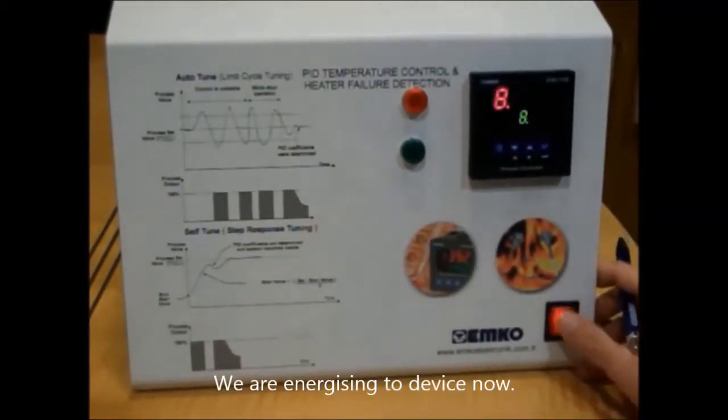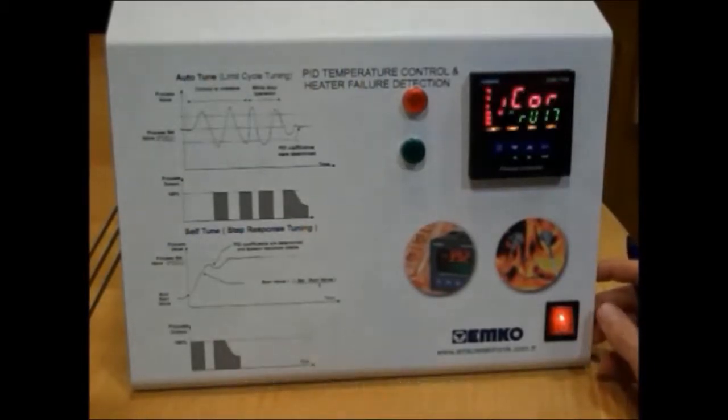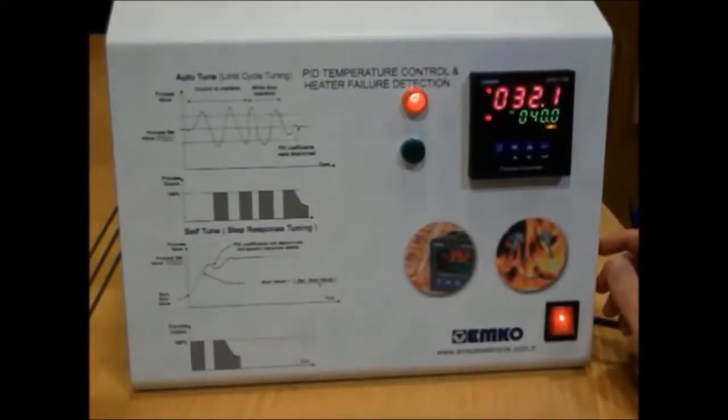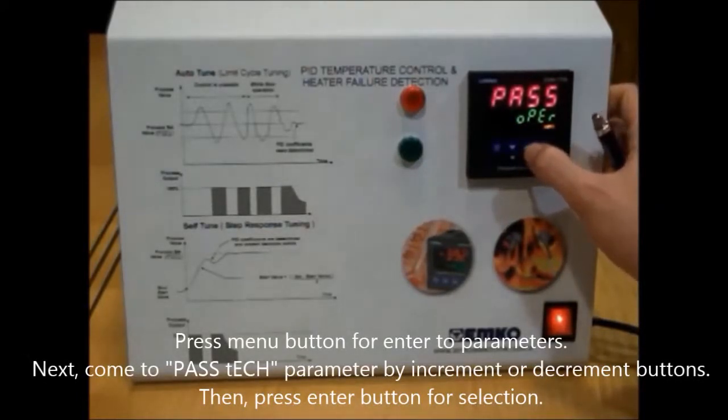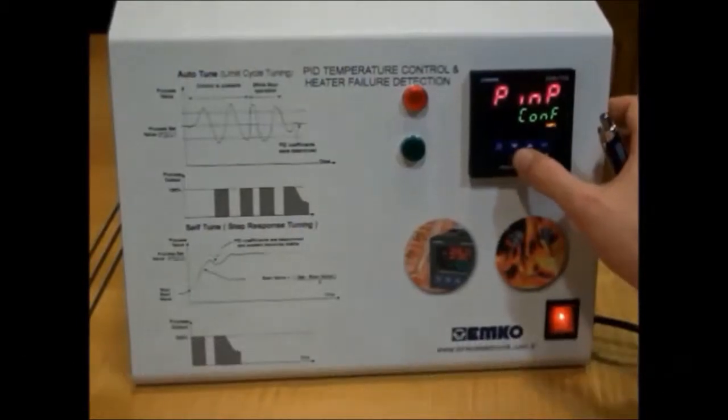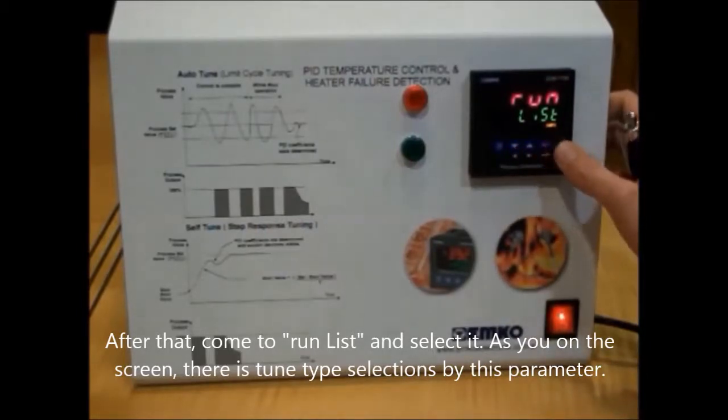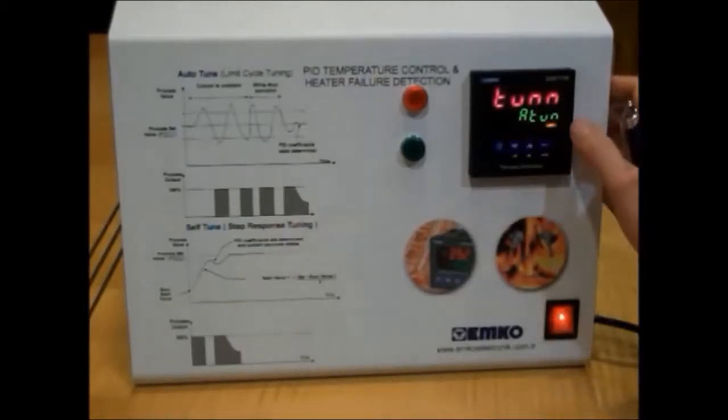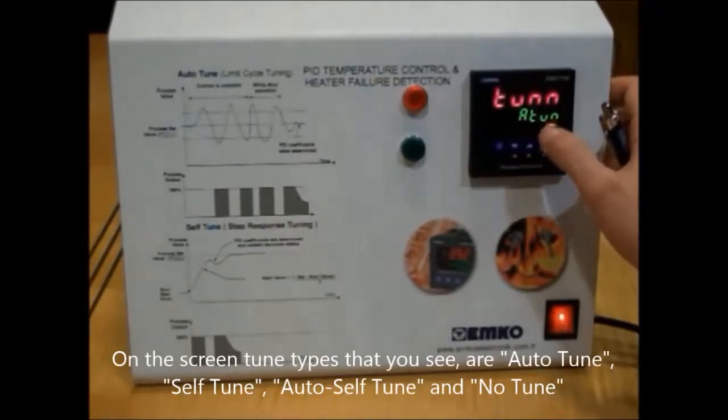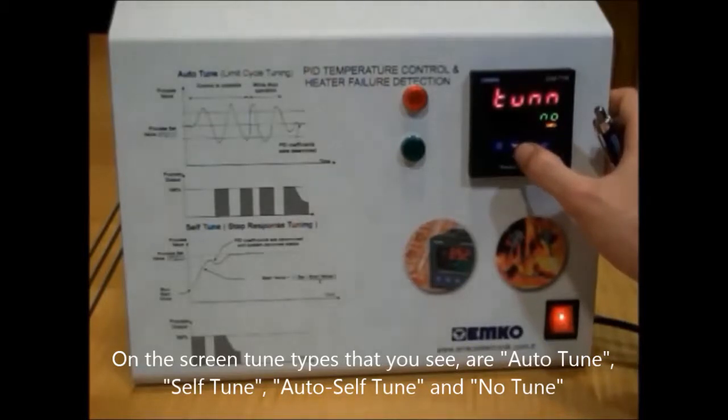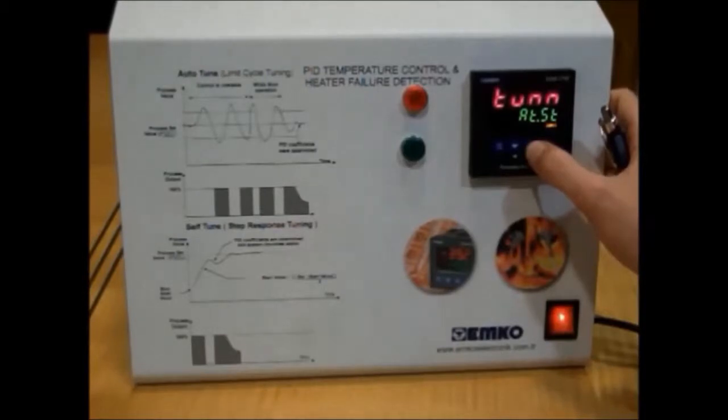Now, we energize the device. Press menu button and then choose the paste tag and then counter run list. Select run list. We will see tune parameters. You can choose by tune parameters, autotune or without tune, s-tune and autotune and self-tune together.